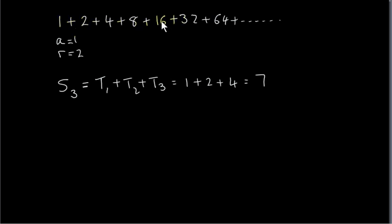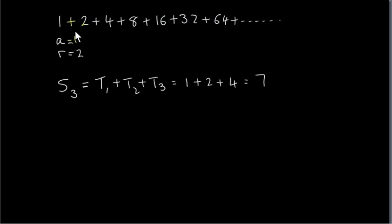For this geometric series the first term A is 1, and the common ratio is 2. You can see that if we take the second term t2 and divide by the first term t1, we get 2 divided by 1 is 2. S3 means the sum of the first three terms. We can write that as t1 plus t2 plus t3, and we get 1 plus 2 plus 4 which is 7.